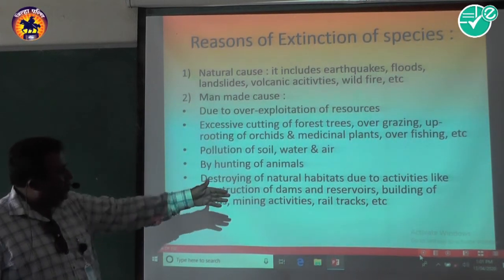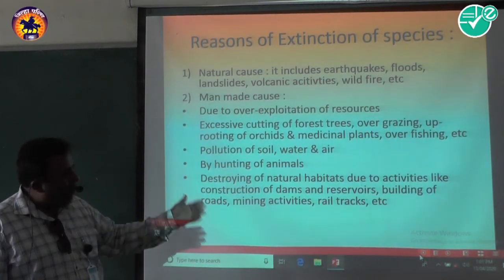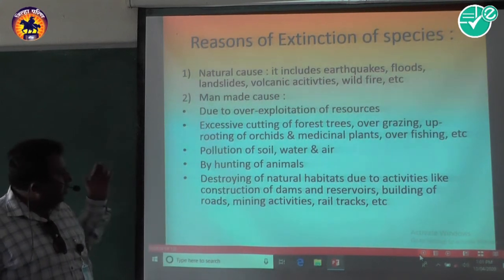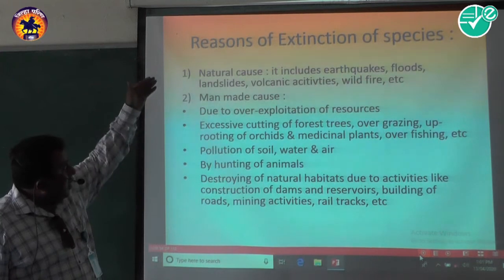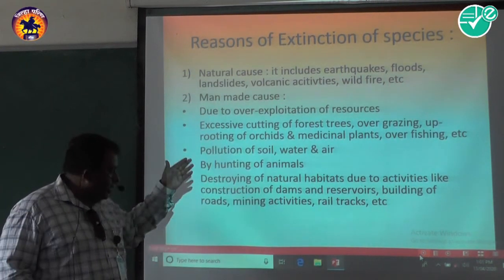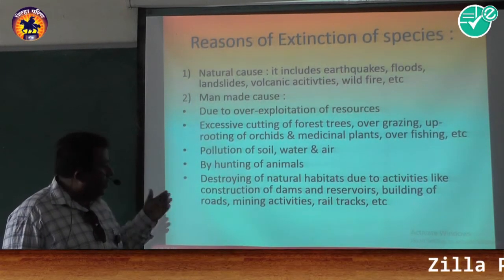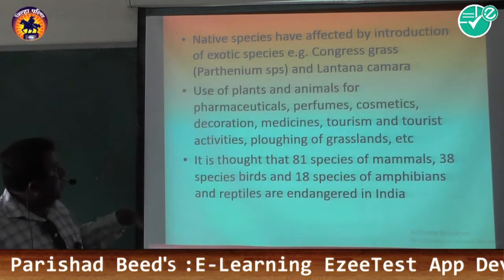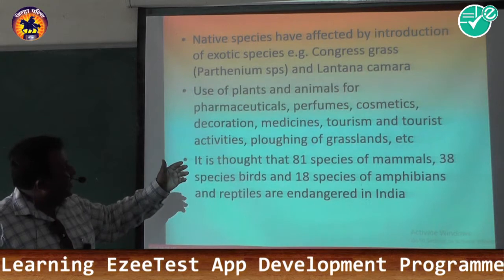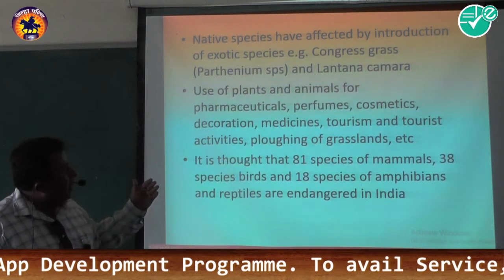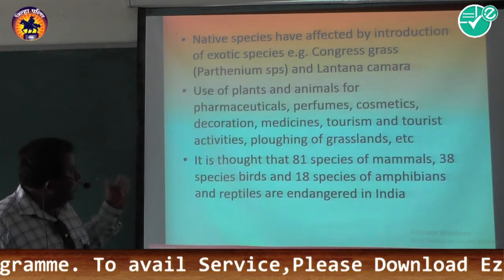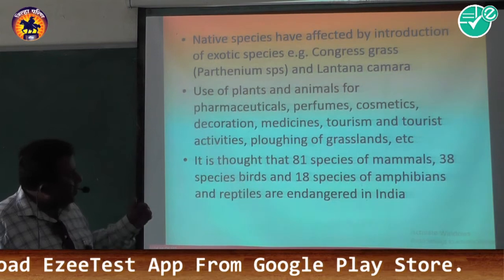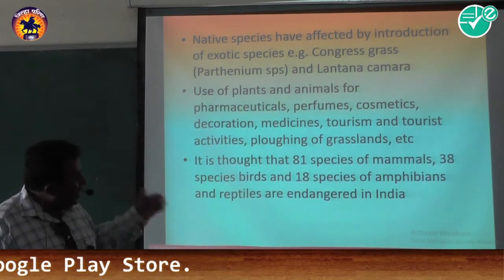Further man-made causes include destruction of natural habitats due to construction of dams, rivers, reservoirs, roads, mining activities, and rail tracks. Native species have also been affected by the introduction of exotic species such as congress grass and Lantana camara. Use of plants and animals for pharmaceuticals, perfumes, cosmetics, decorations, medicines, tourism, and activities like ploughing of grasslands also contribute.